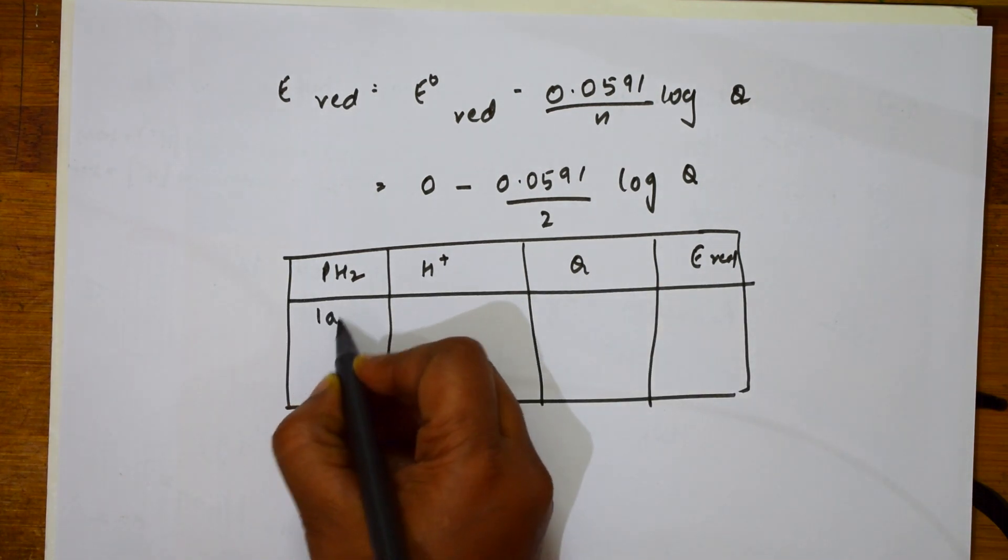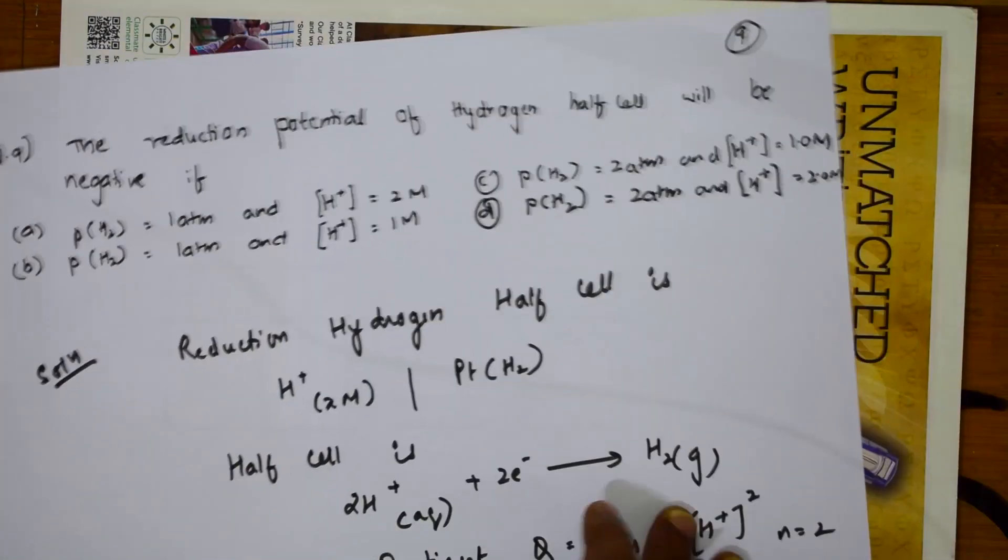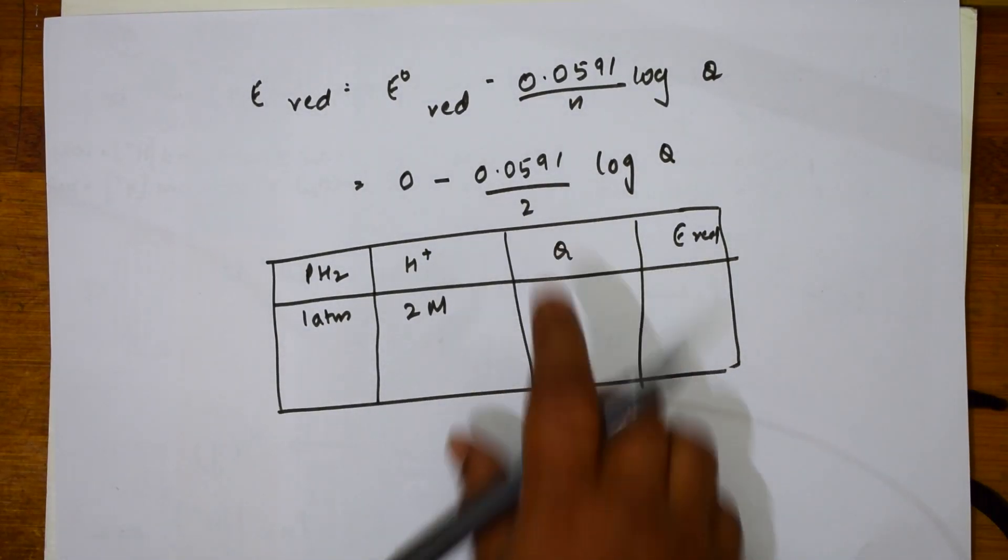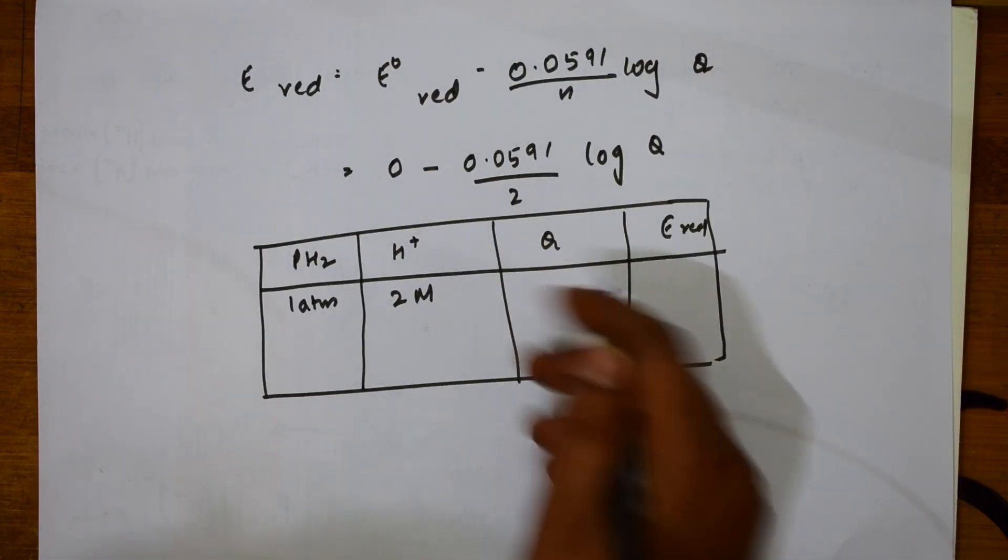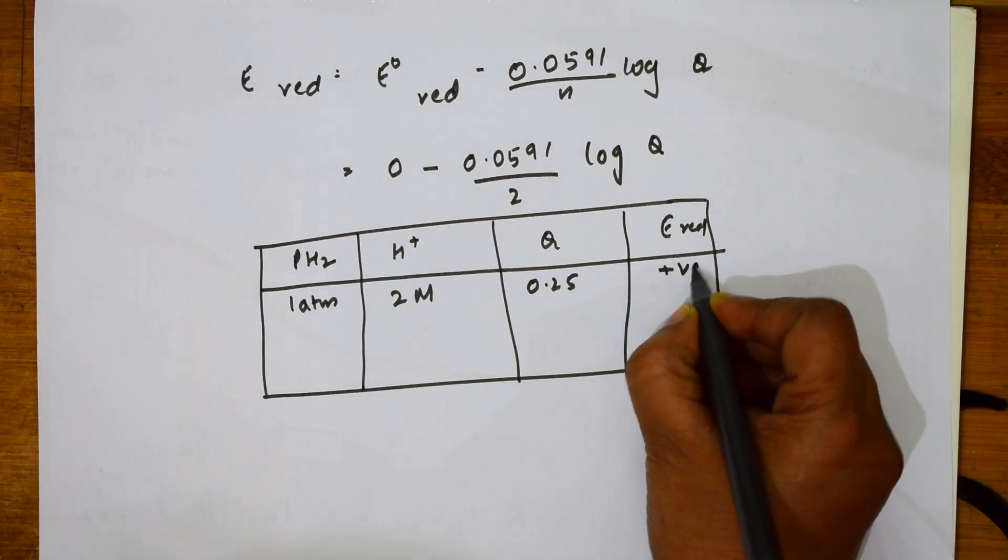Now, for the first one, PH2 1 atmosphere. How much is that? 2 molar. How much is Q value? If I start substituting in this formula, I will be substituting in that formula. Q value, if I take out, I will get 0.25, which is positive.